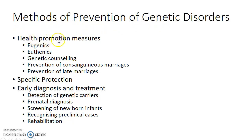The methods of prevention of genetic disorders include health promotion measures, specific protection, and early diagnosis and treatment. Health promotion measures include eugenics, euthenics, genetic counseling, prevention of consanguineous marriages, and prevention of late marriages.